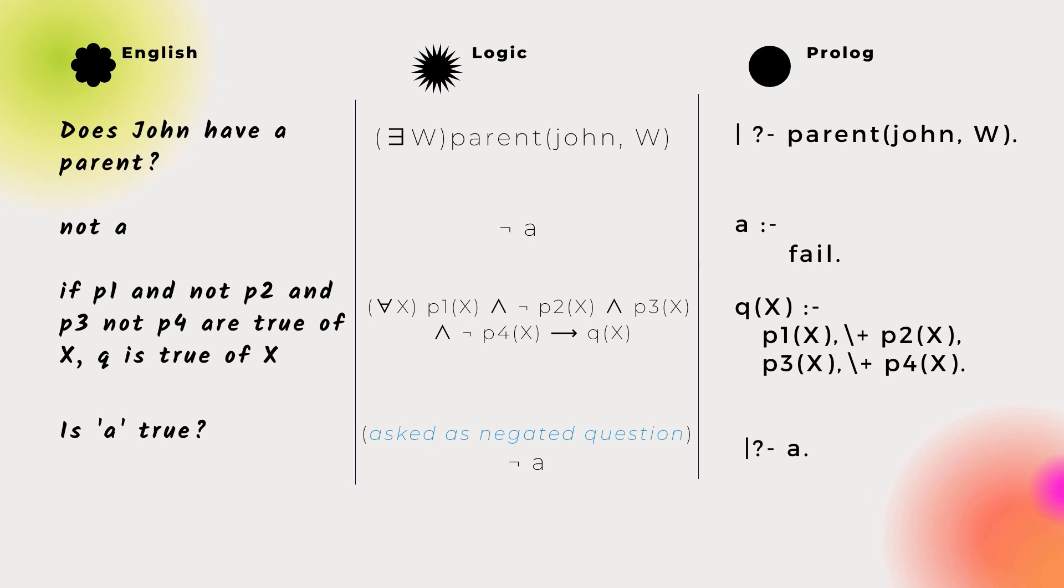Existential quantifiers are presented here with negation for a reason. Although it's not common, for individual predicates there's a way to express negation using the built-in predicate FAIL. And the predicates in the body of a rule, but not the head, can be negated. So expressions like this are also OK.